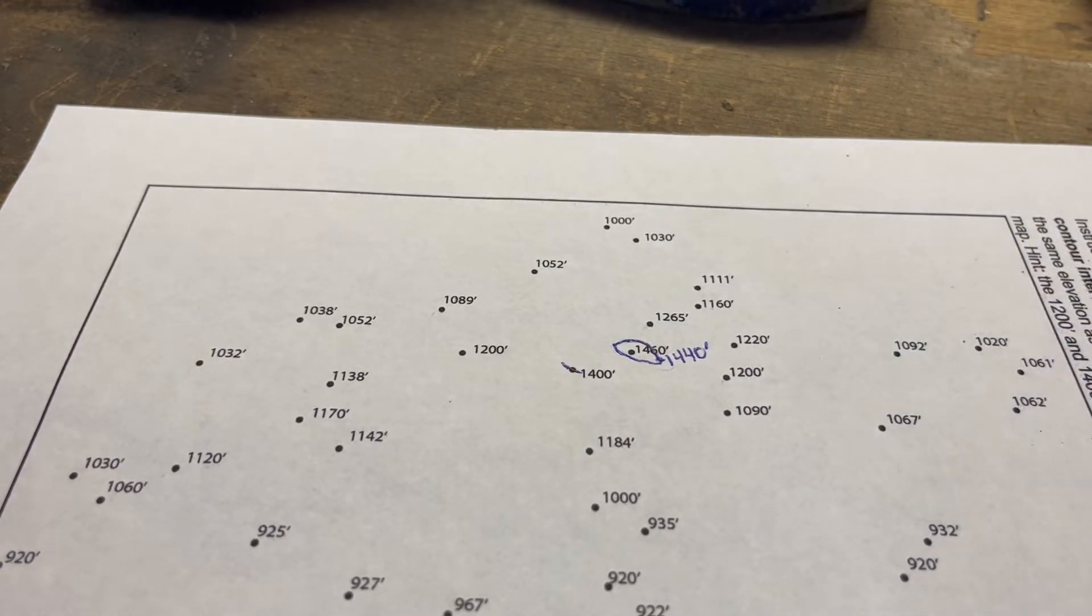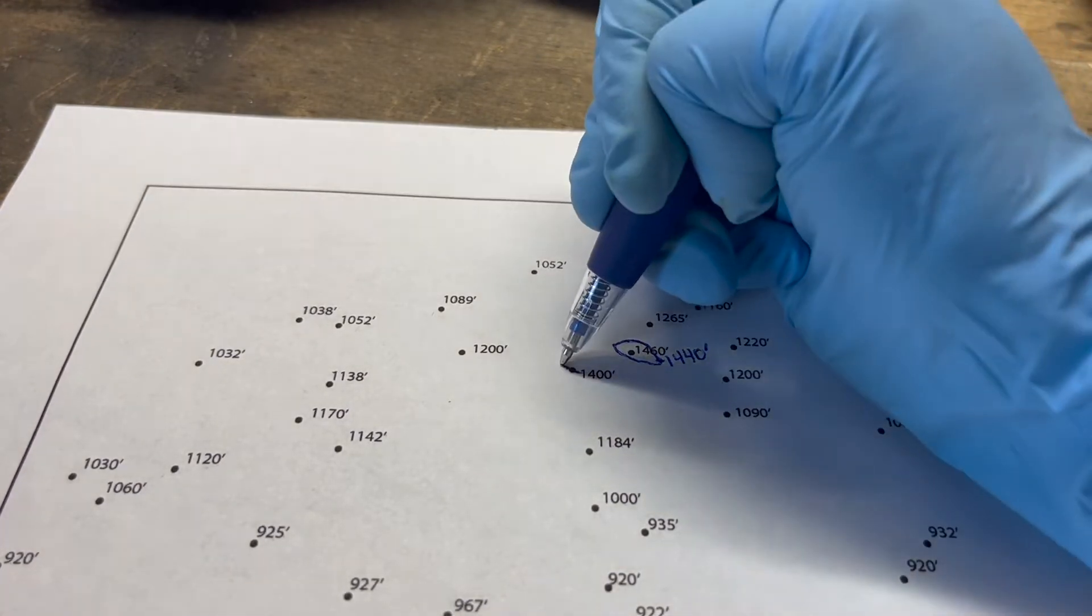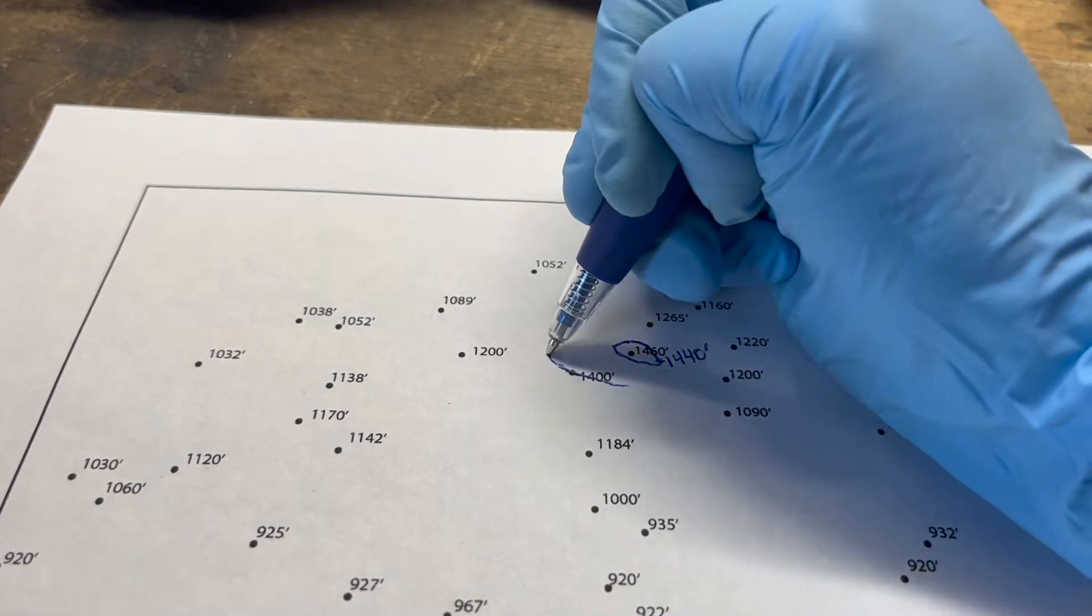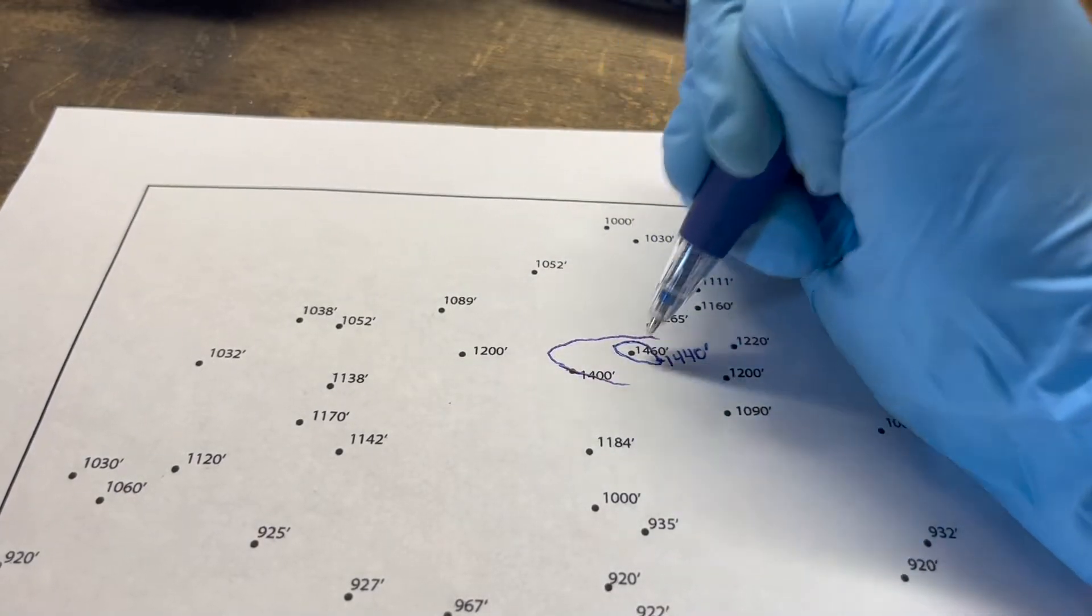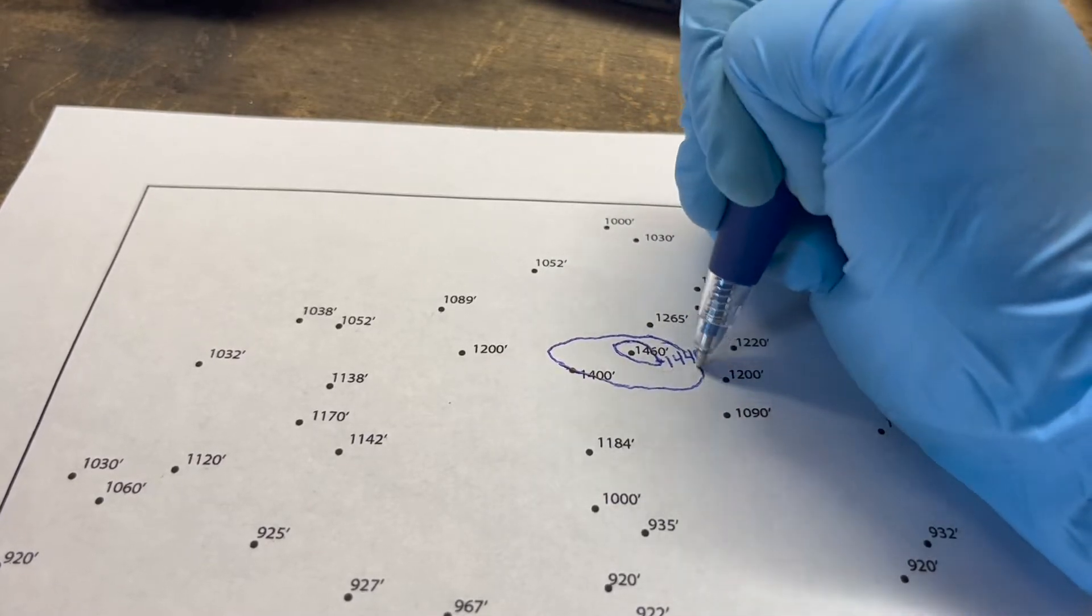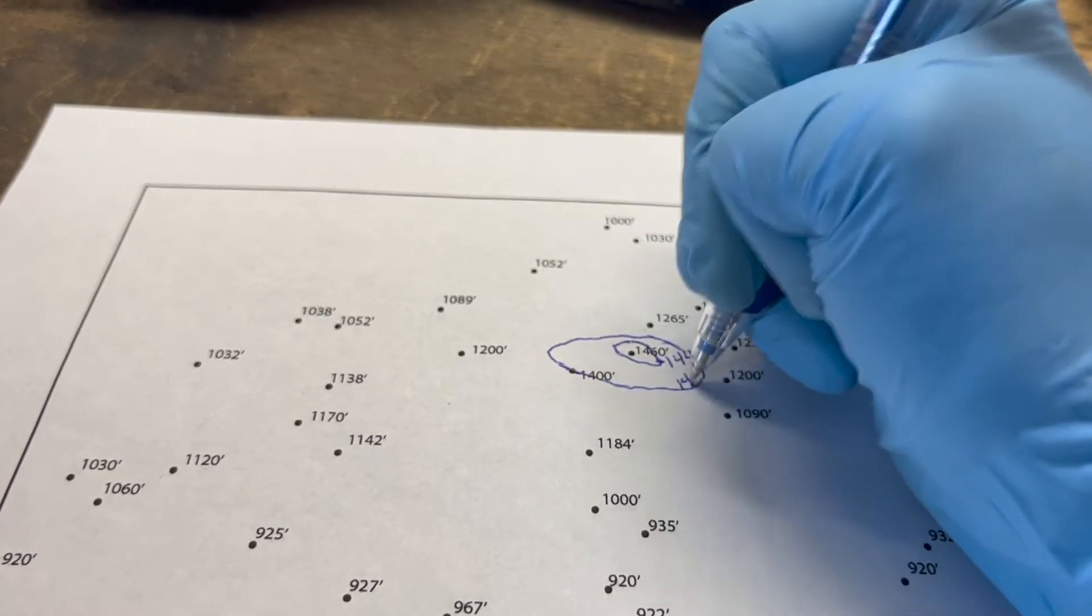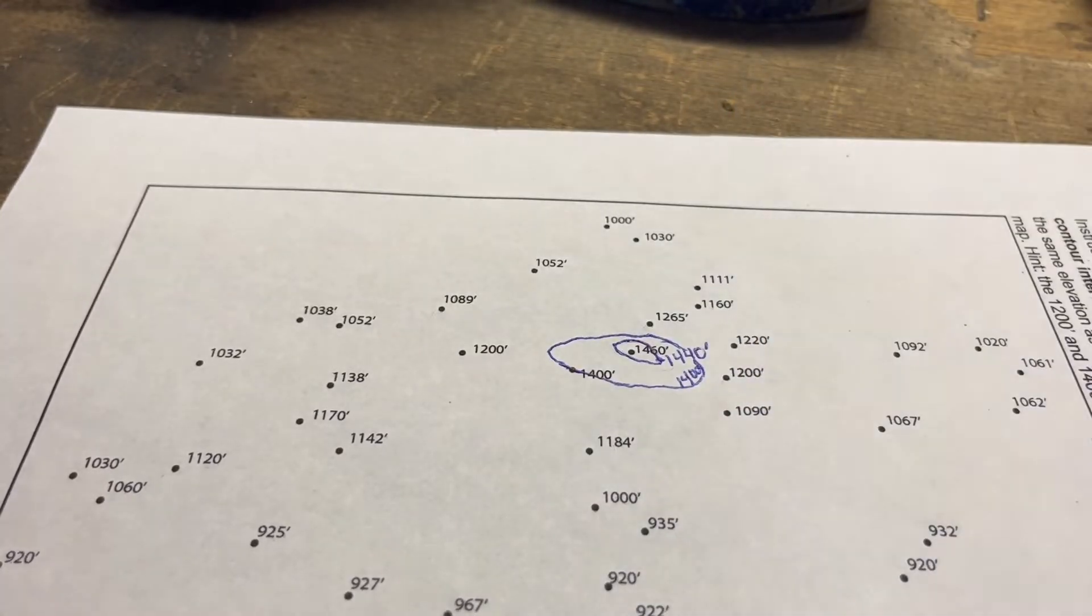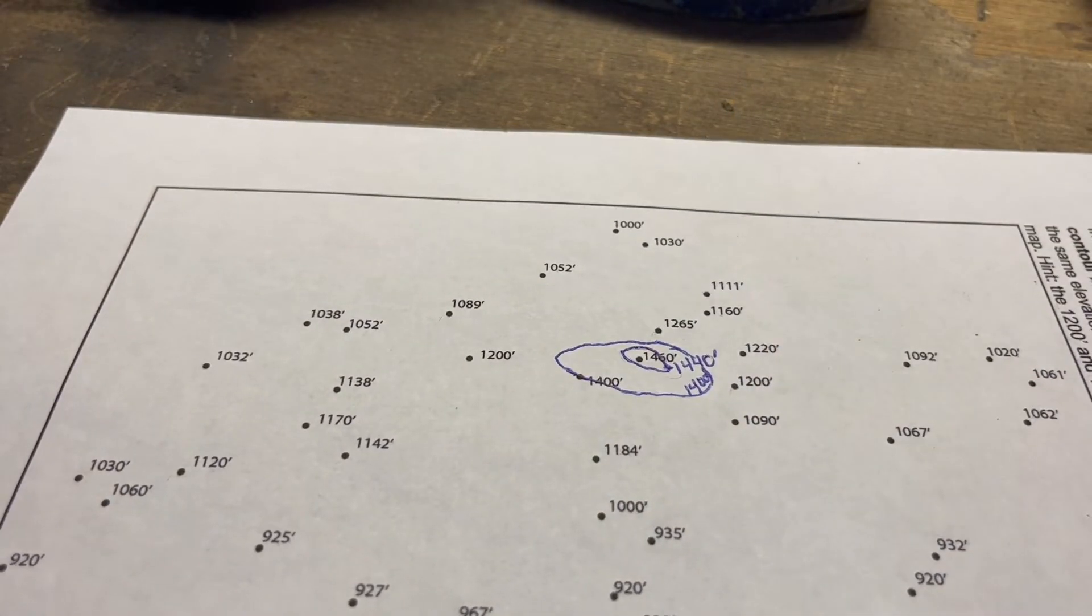Your next contour line, since it will represent a step down of 40 feet because the contour interval is 40 feet, the next line around here will be representing 1400. You do not have to label them as you can see it gets to be a bit of a mess. I can't even do it all that neatly.